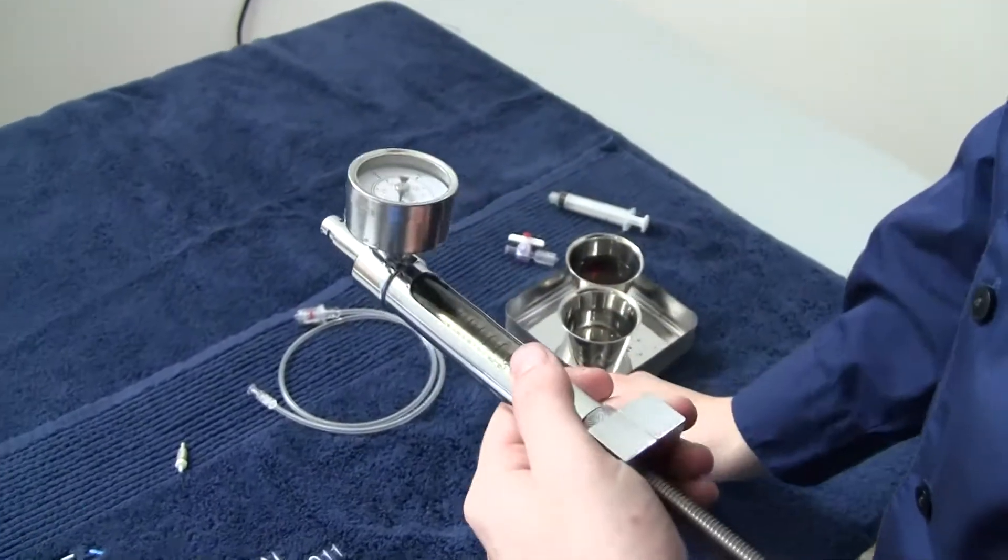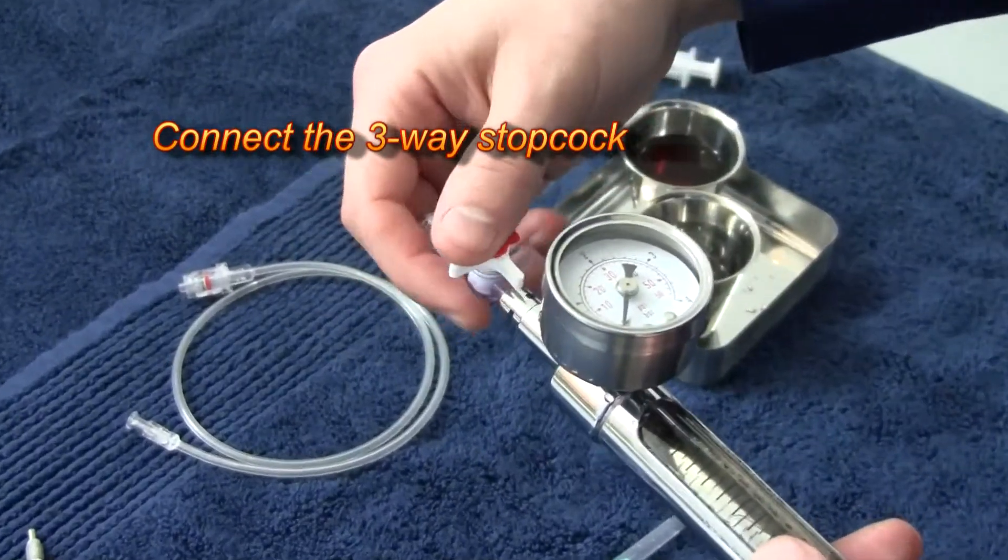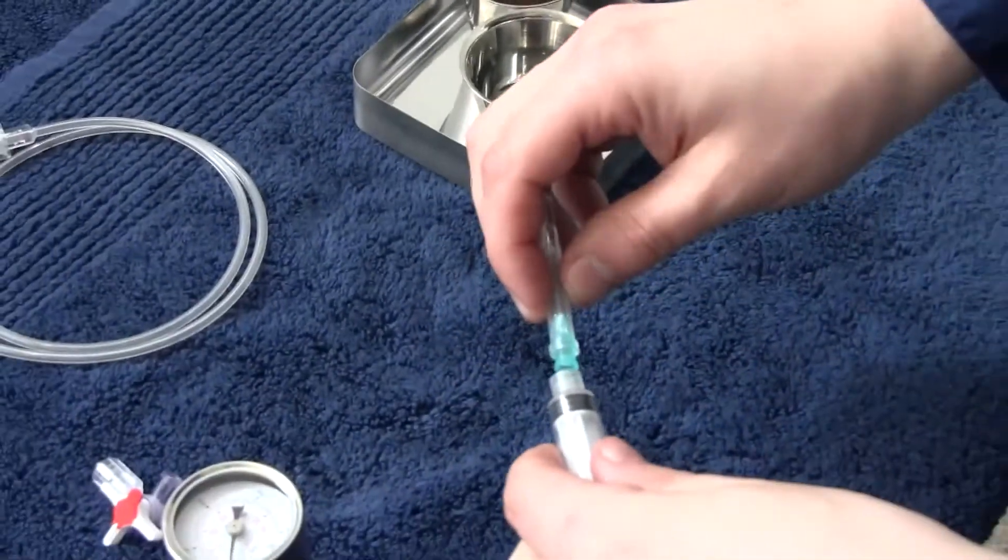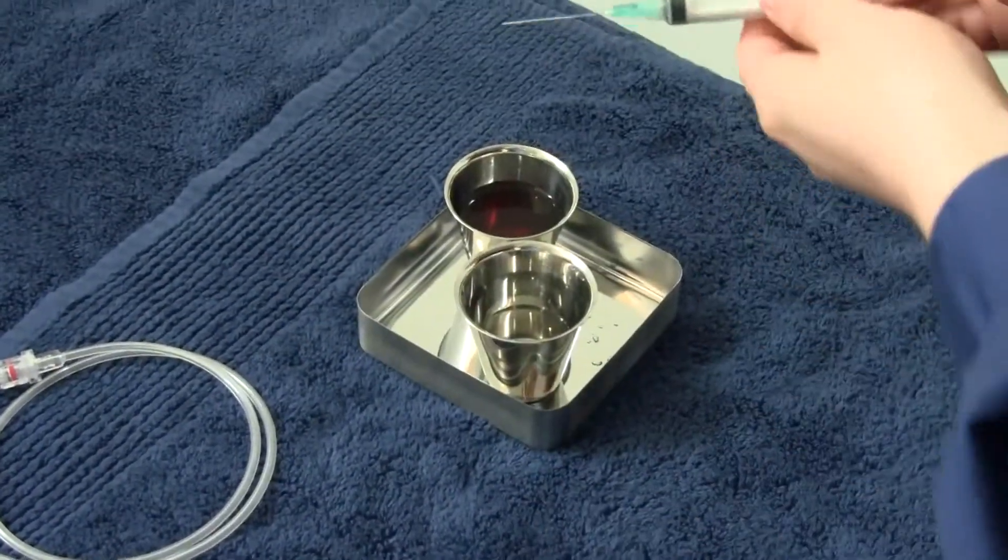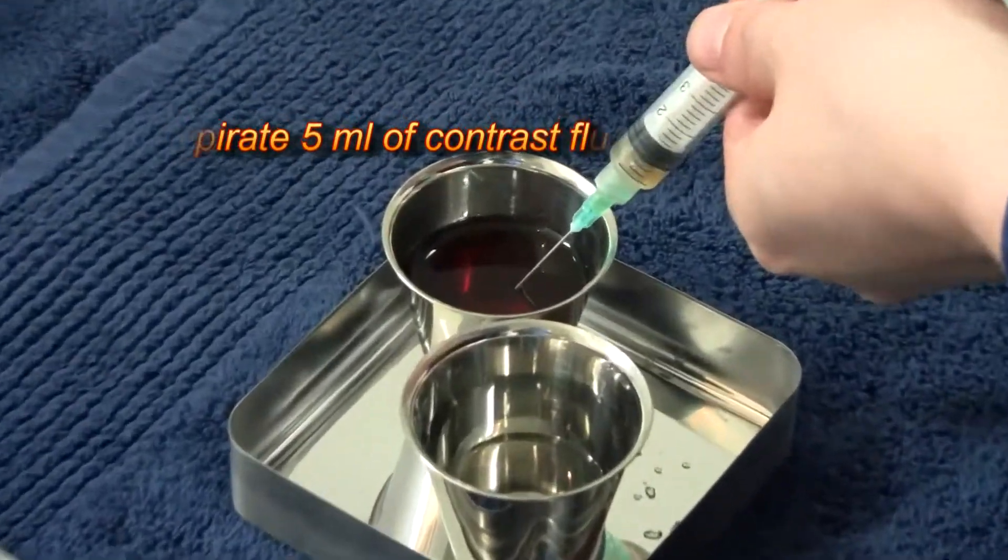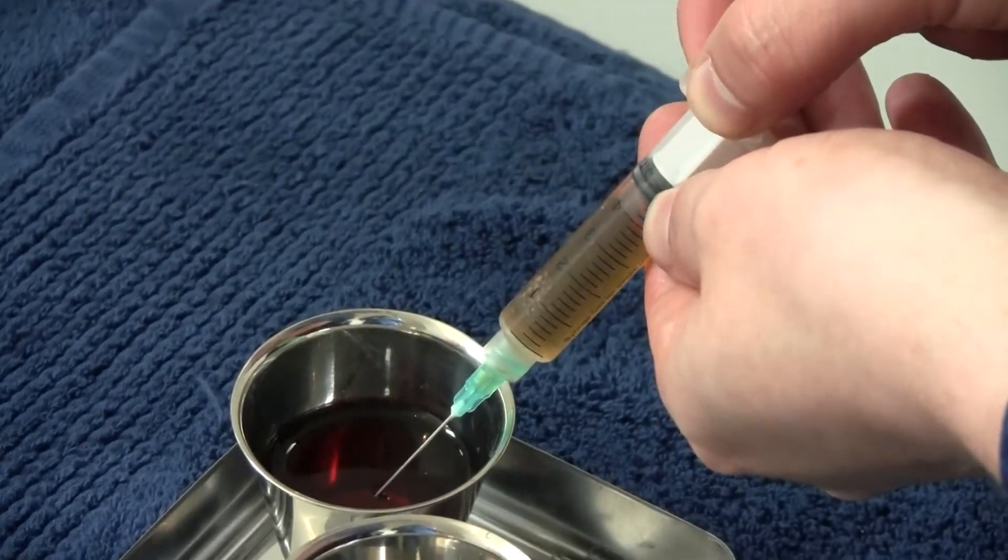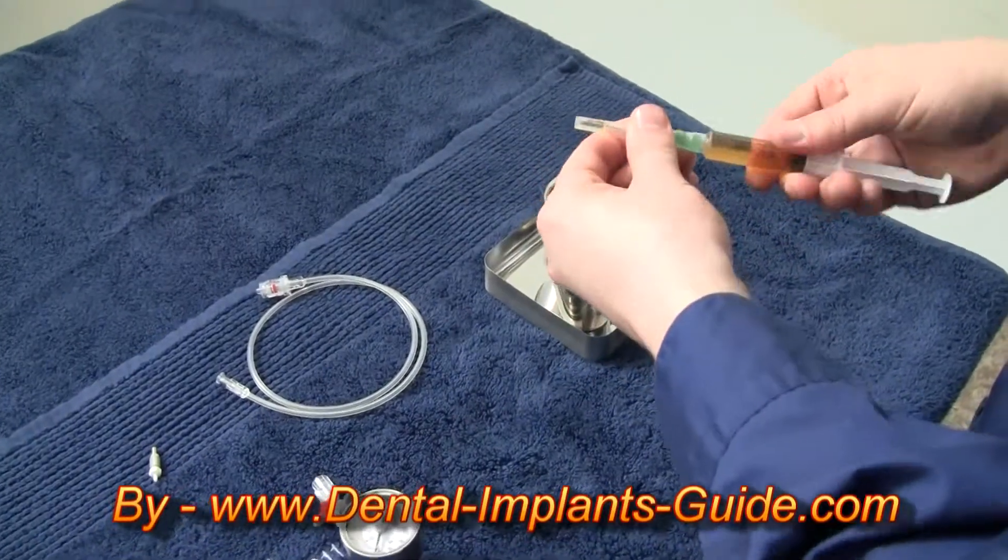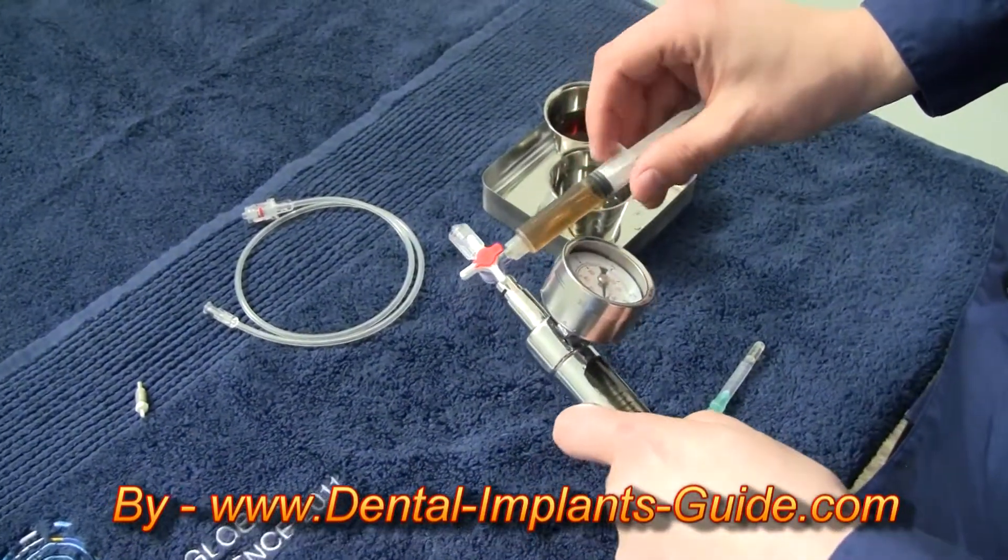Remove the 21G needle and connect the three-way stopcock to the end deflator. Aspirate 5ml of contrast material into the syringe. Connect the syringe to the lateral side of the three-way stopcock.